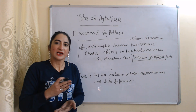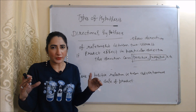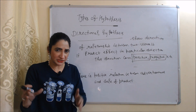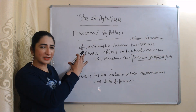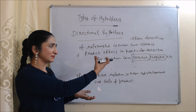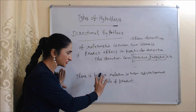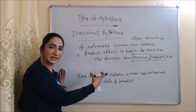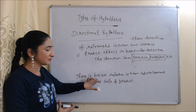Now we will see directional hypothesis. Directional hypothesis shows the direction of relationship between two variables — we can say it predicts the effect in a particular direction, which can be positive, negative, etc. For example, there is a positive relation between advertisement and sale of product. This is called a directional hypothesis because it predicts the effect in a positive direction.